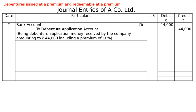First, the application entry: Bank Account is debited to Debenture Application Account, being debenture application money received by the company. The amount is Rs. 44,000 — that is Rs. 40,000 plus a 10% premium of Rs. 4,000, totalling Rs. 44,000.